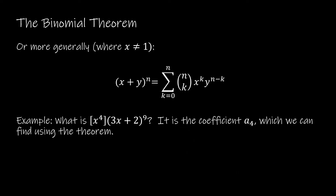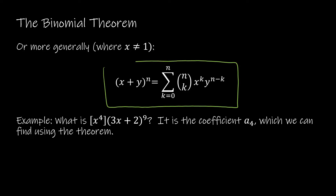In my last example I used (1 + x), but keep in mind that x and y can be a constant, variables, or variables that include coefficients. I want to do one more example where I use a coefficient with a variable and a constant. I'm going to find the coefficient of x^4 in (3x + 2)^9. Using the binomial theorem, x in this case is 3x, y is 2, and n is 9. Because I'm solving for the coefficient of x^4, that means k = 4.